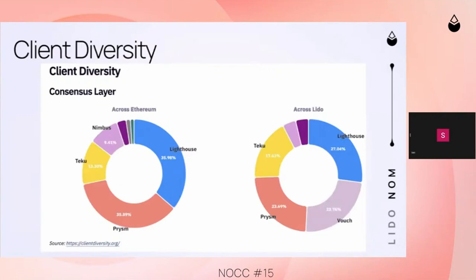Moving on — or actually back to client diversity. First, consensus layer diversity. On the left you'll see the general distribution across Ethereum, across the entire network. Across Lido it's more or less similar. We have lower usage of Lighthouse and Prism, and a lot of node operators are fans of Vouch. Jim was on last month explaining what Vouch is — it's a dedicated validator client that can be connected to multiple validators at the same time, supporting Nimbus, Teku, Lighthouse, and Prism.